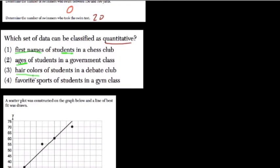Hair colors — color can be determined through number, however it's more of a qualitative measure. Your favorite sport is something that's definitely opinion-based or qualitative.